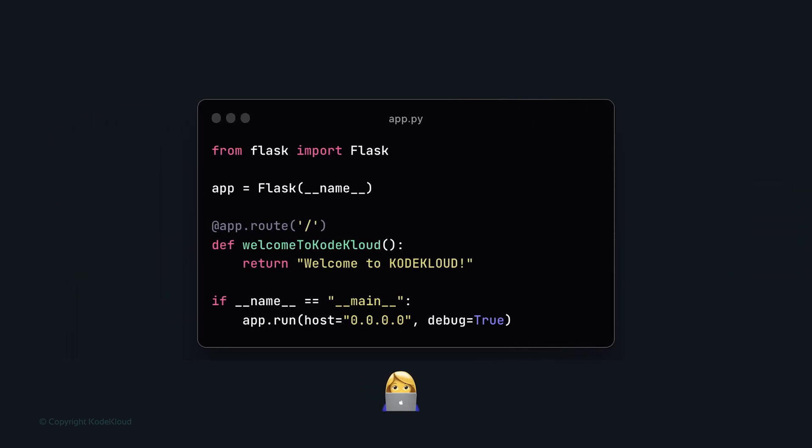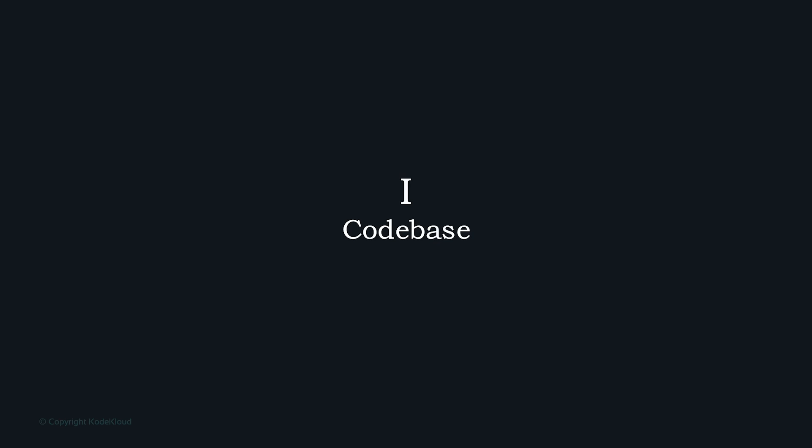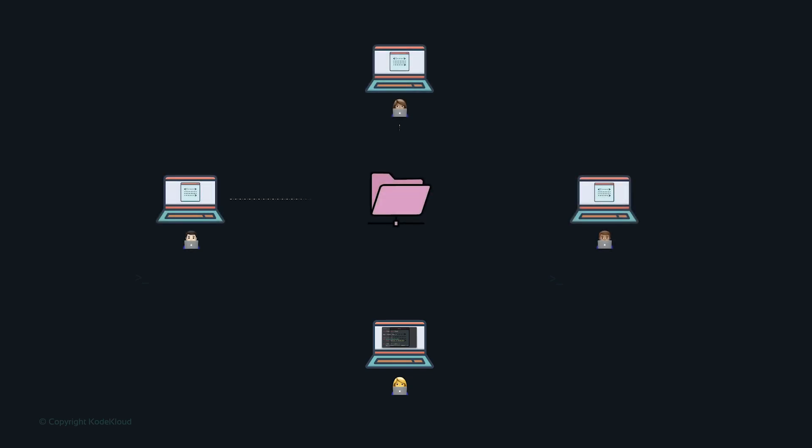Now, as of now, your code is only on your laptop. The first rule in the 12-factor app is about having a single codebase. As users visit the website and request more features, you bring in additional developers. Everyone works on their own development environments but on the same codebase, copying code to a central hub. They start stepping on each other's toes, creating conflicts — and that's where Git comes in.